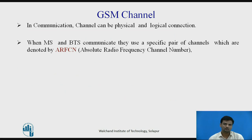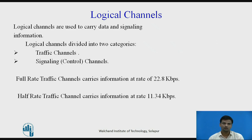The next part of this video lecture is GSM Channels. In communication, a channel can be a physical or logical connection. When an MS and BTS communicate, they use a specific pair of channels denoted by ARFCN — Absolute Radio Frequency Channel Number. Data, whether user traffic or signaling information, is mapped onto physical channels by defining logical channels. A logical channel carries information of a specific type, and a number of these may be combined before being mapped onto the same physical channel. Logical channels are divided into two categories: traffic channels and signaling channels.